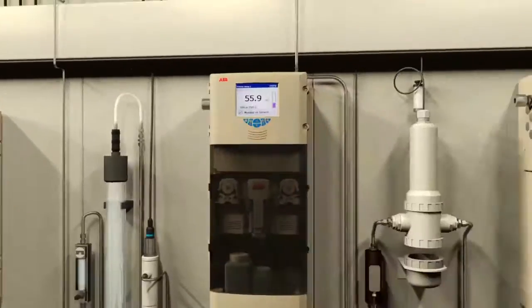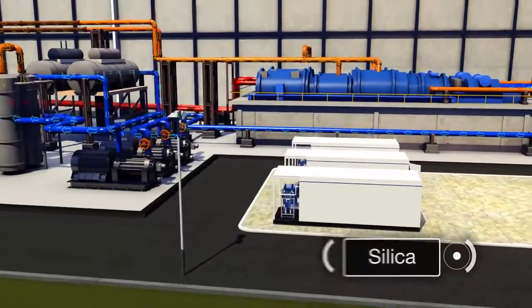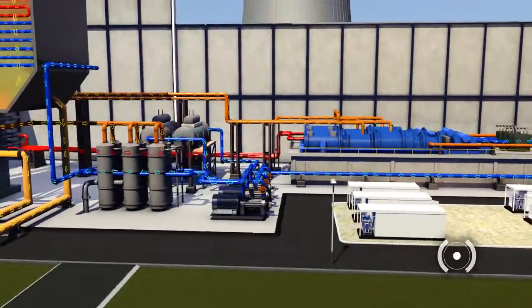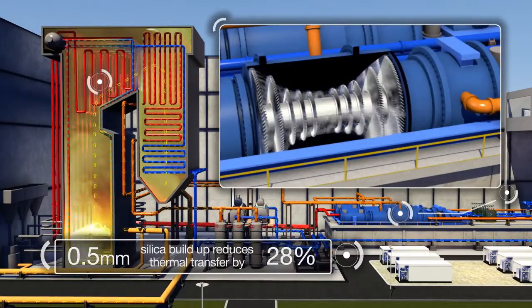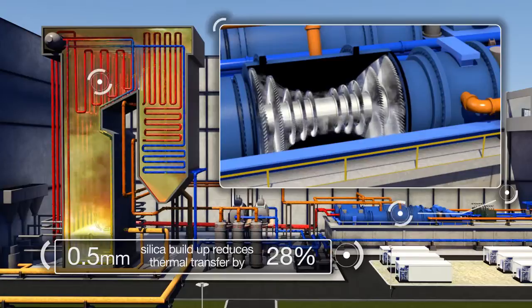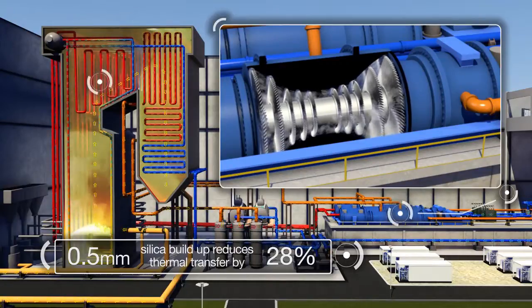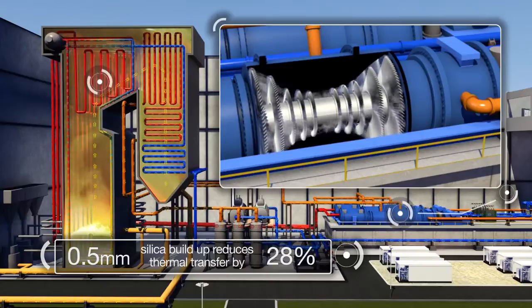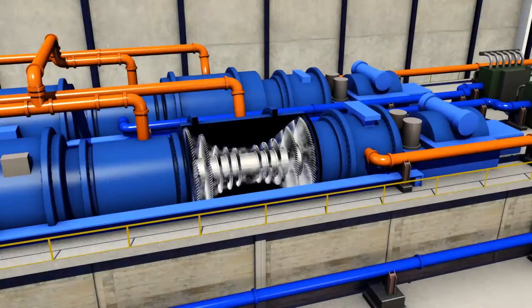Silica forms a dense porcelain-like scale inside the boilers and turbines that cannot be removed even with acid. Its low thermal conductivity means even a 0.5mm build-up of silica can reduce thermal transfer by 28%, leading to reduced efficiency, hot spots and eventual plant failure.